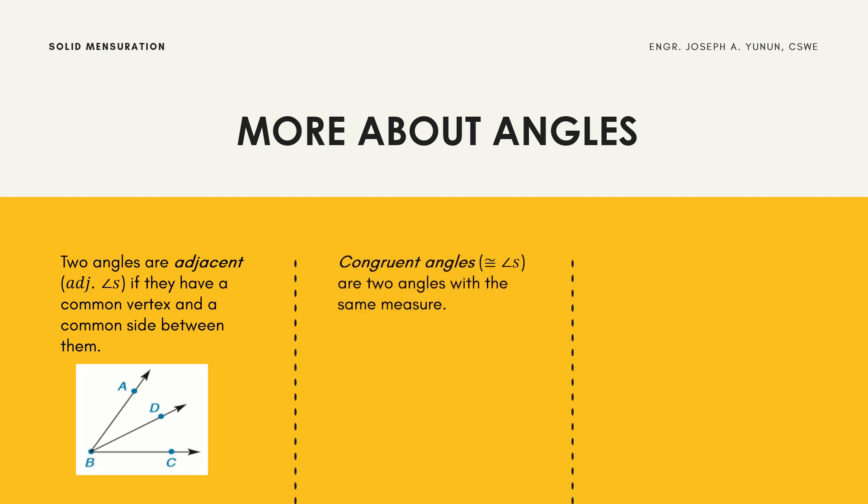Congruent angles are two angles with the same measure. As shown in the figure, two angles are said to be congruent if angle 1 equals angle 2. For example, if angle 1 measures 45 degrees, the two angles are congruent if angle 2 is also 45 degrees.